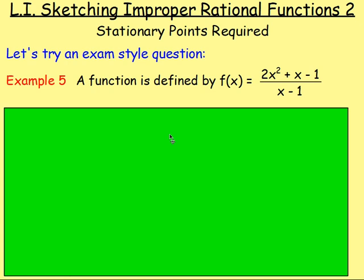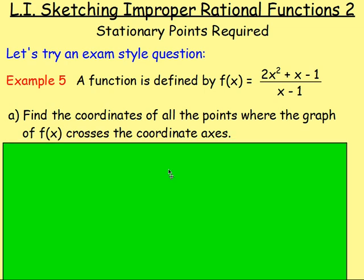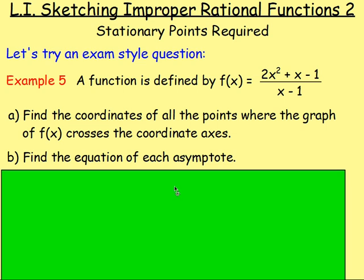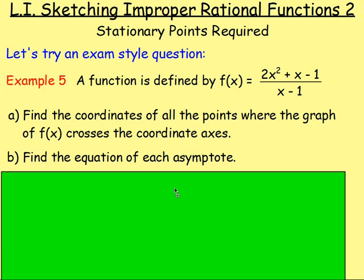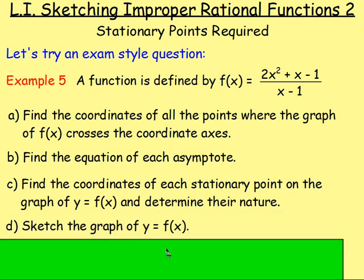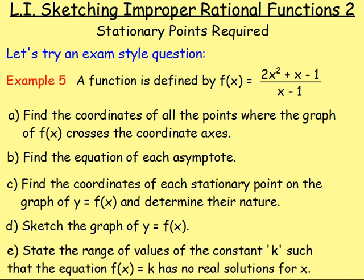Part a: find the coordinates of all the points where the graph of f(x) crosses the coordinate axes — in other words, where does it cross the x-axis and where does it cross the y-axis? Part b: find the equation of each asymptote, both vertical and non-vertical. Part c: find the coordinates of each stationary point on the graph of y equals f(x) and determine their nature. Part d: sketch the graph of y equals f(x). And for a bonus, part e: state the range of values of the constant k such that the equation f(x) equals k has no real solutions for x.